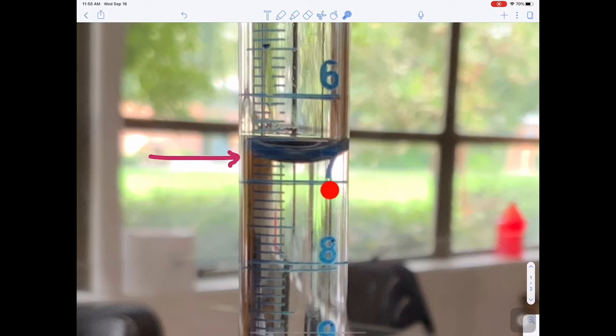Here we have a line that represents 7. Here's a line that represents 6. And then we need to look at how many divisions are there in between. Well, there's 1, 2, 3, 4, 5, 6, 7, 8, 9. There's 10 divisions. So each line represents 0.1 milliliter.